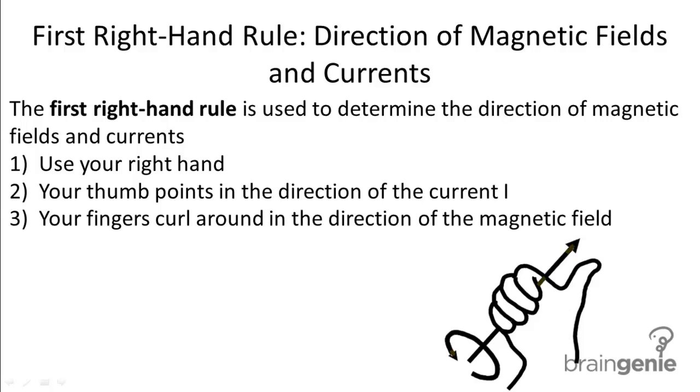First right hand rule: direction of magnetic fields and currents. The first right hand rule is used to determine the direction of magnetic fields and currents. We have a simple set of directions here that will teach you how to use the first right hand rule.